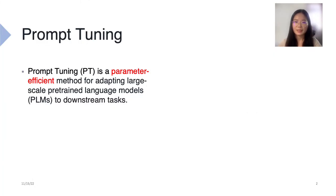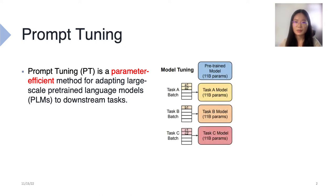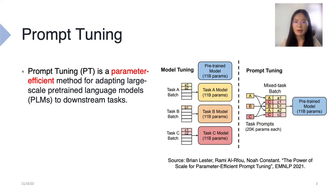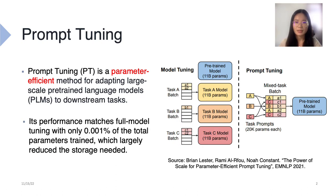Prompt tuning is a parameter efficient method for adapting large-scale pre-trained language models to downstream tasks. Suppose we have three different tasks A, B, and C that we want to adapt to. Under full model fine-tuning, we must train three different models each with 11 billions of parameters and decide how to allocate resources based on computational load, which creates a lot of complexity. With prompt tuning, however, we only need to deploy one model and specialize it to different tasks by switching the prompt in the input. That simplifies deployment in the real world. The prompt that we tune is about 0.001% of the large model, so we only need very little additional storage.